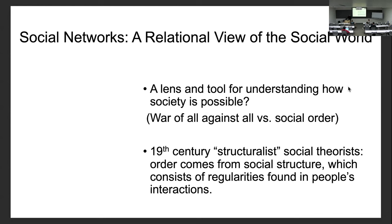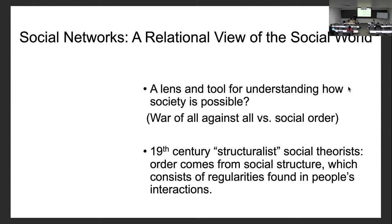In the social sciences, we talk about social networks — people's relationships with one another. It has been primarily used as a tool rather than a theory, a method or set of methods for understanding how we as a society can thrive or even coexist. Think about what happens if everybody is egoistic and selfish — social order is just not possible. That question was very much alive during the 19th century industrial revolution.